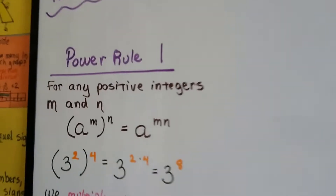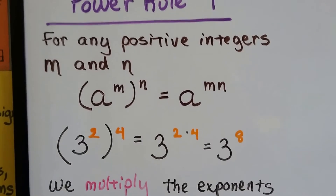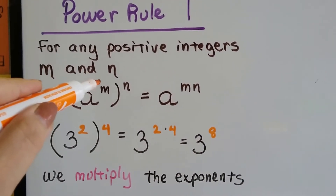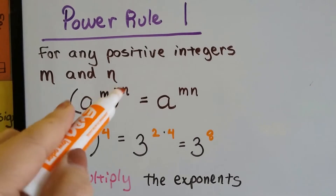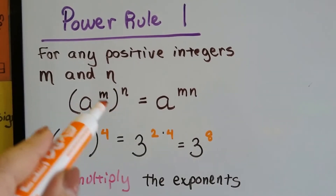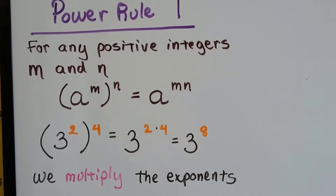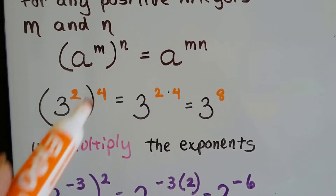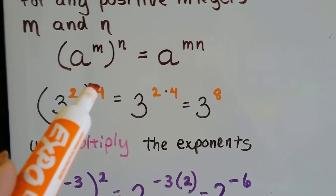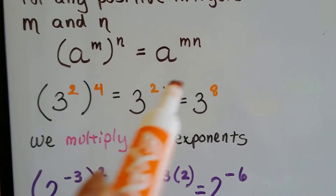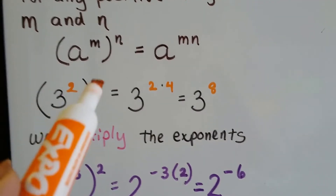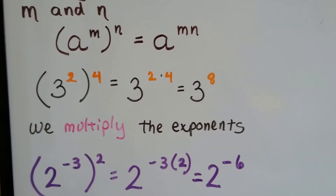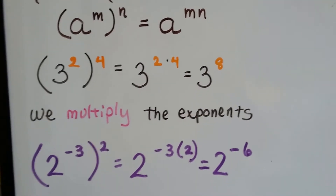Here's power rule number 1. For any positive integers m and n, if we've got a base number to the m power in parentheses with the n on the outside, we can just multiply the two exponents together — m times n. So with numbers: if we have 3 to the 2nd power inside parentheses and a 4 exponent on the outside, it means 3 to the 2 times 4. The exponent on the inside gets multiplied by the exponent on the outside, and we end up with 3 to the 8th power. So we multiply the exponents.